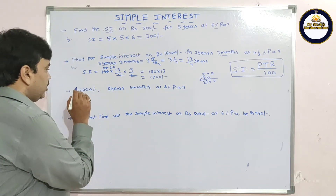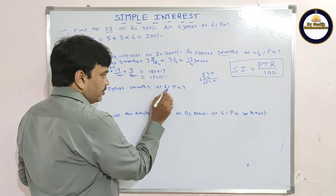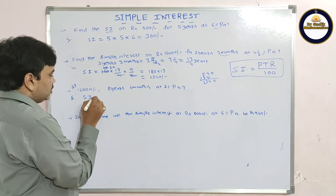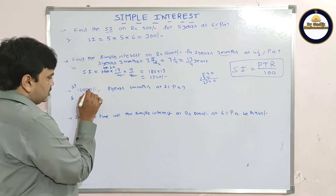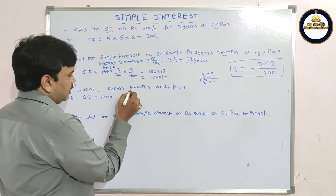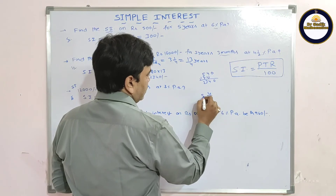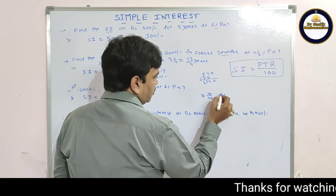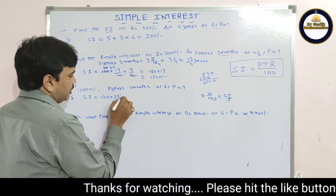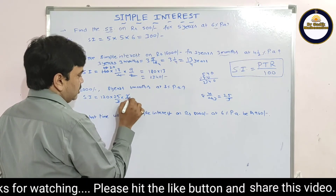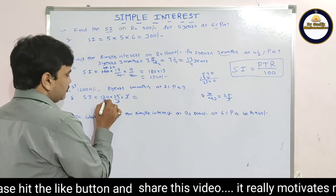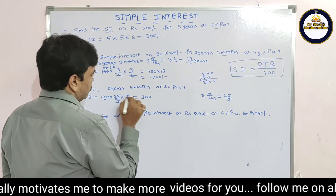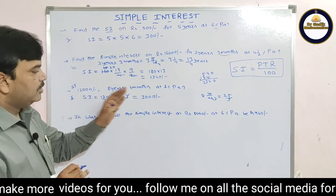Problem 3: Find the simple interest on rupees 12,000 for 8 years 4 months at 3% per annum. SI = 12,000/100 × time × 3. Convert 4 months: 4/12 = 1/3, so time = 8⅓ years = 25/3. SI = 120 × 25/3 × 3. The 3s cancel, giving 120 × 25 = 3000 rupees. The simple interest is 3000 rupees.